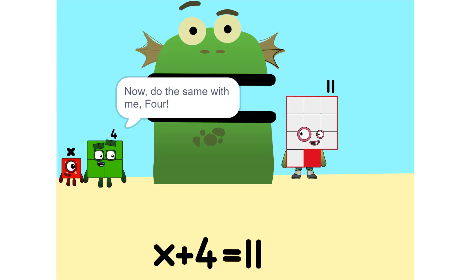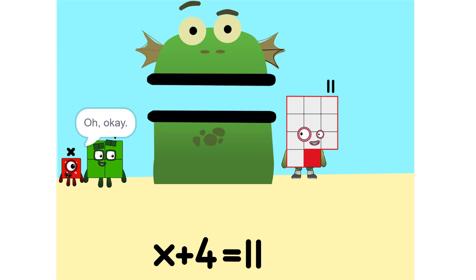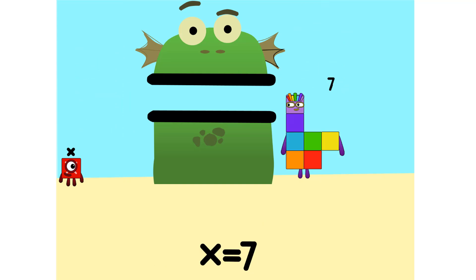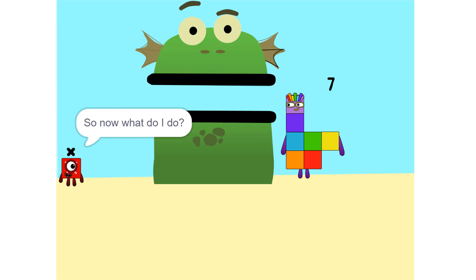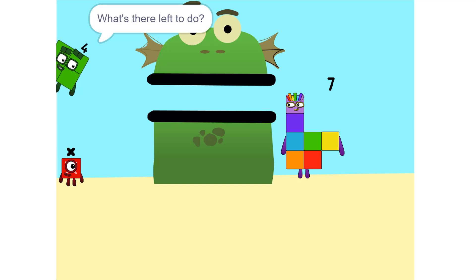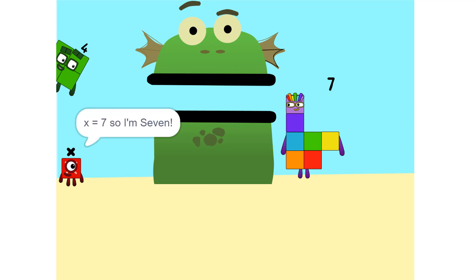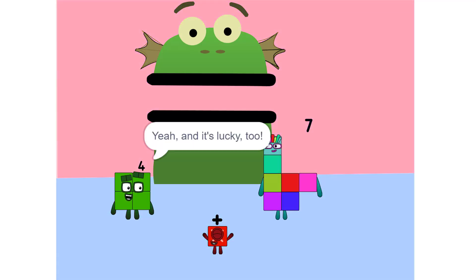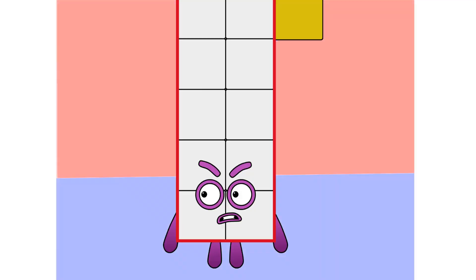Now do the same with me. 4. Okay, 11 minus 4 is 7. So now what do I do? What's there left to do? X equals 7, so X is 7. Yeah, and it's lucky too. Now that you know your value, what do you want to do? You want to celebrate. So now you have to choose the art!